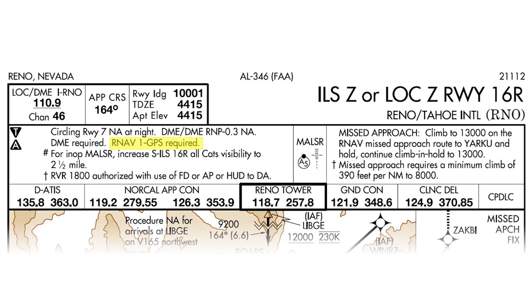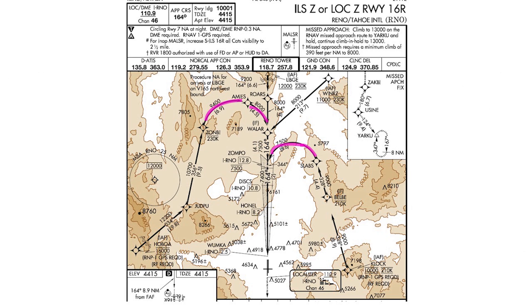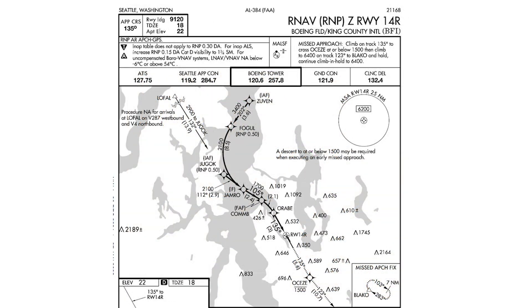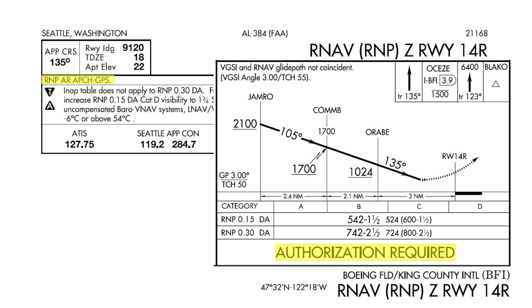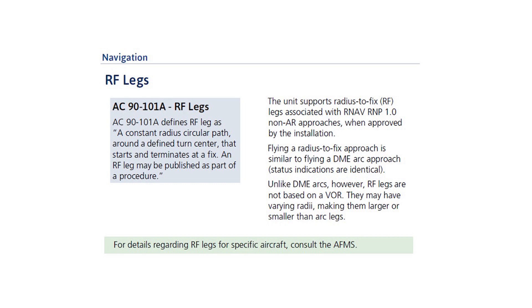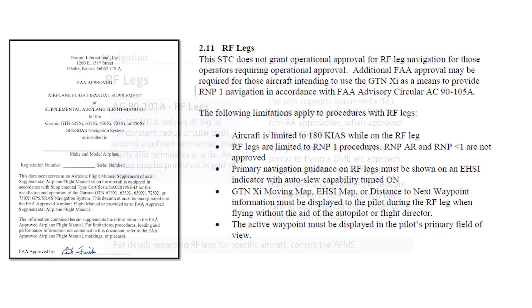So far there aren't many such procedures in the US, but you can expect to see more in the future. The ILS at Reno does include another curious element: the arcs that lead to the final approach course. Those arcs are RF, radius-to-fix legs, and they add a complication to the RNAV-RNP GPS mix. RF legs look like familiar DME arcs, but they are an RNAV GPS feature, and not all IFR GPS systems are approved to fly them. Until recently, RF legs were included only in authorization-required procedures. Today, however, the Garmin GTN series, for example, can support RF legs with some limitations. Those conditions are described in the airplane flight manual supplement for the GTN series, and for other systems such as the latest G1000 with the appropriate software updates.